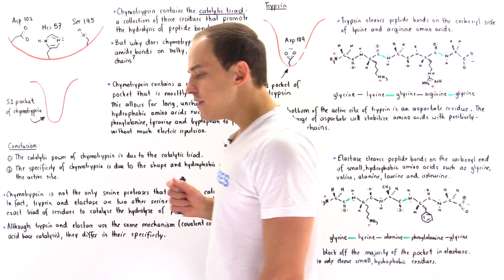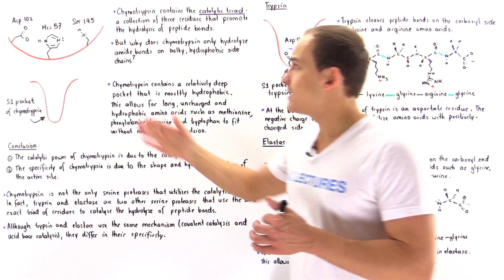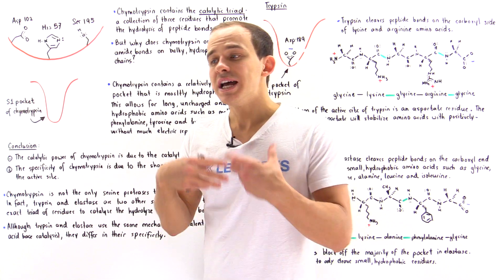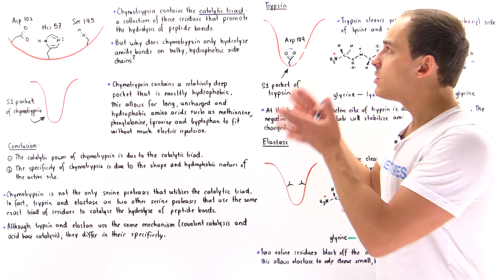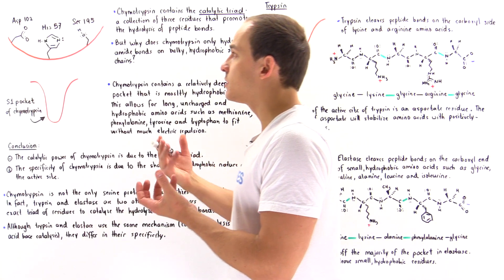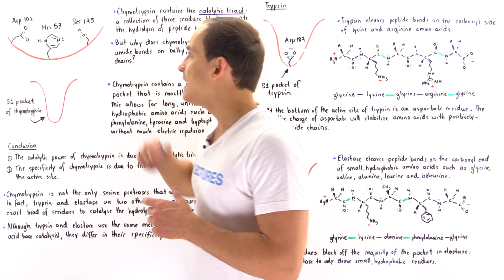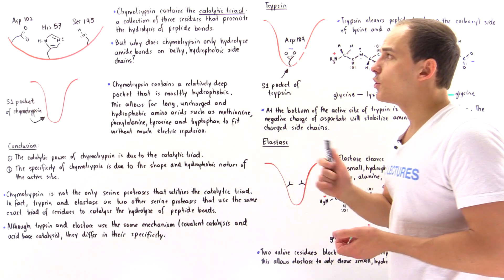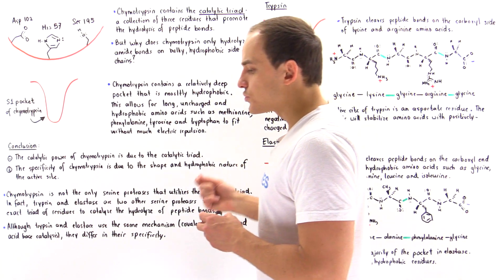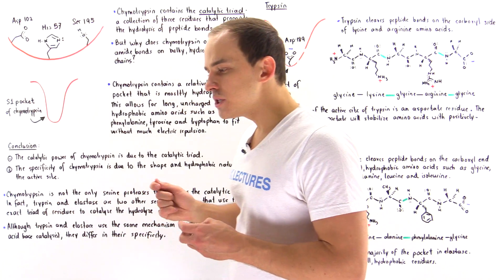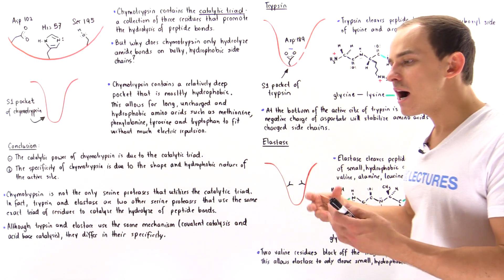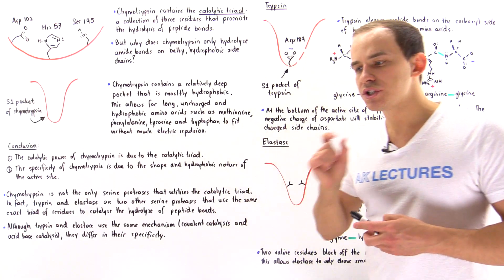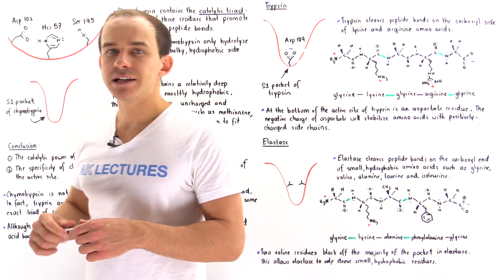As we discussed previously, it's the presence of the catalytic triad inside the active site of chymotrypsin that actually gives it the power of catalysis — the ability to actually cleave those peptide bonds. The catalytic triad is basically this collection of three individual residues: aspartate, histidine, and serine, which work together to promote the cleavage of those peptide bonds. The question still remains: what exactly gives chymotrypsin its specificity — the ability to only cleave on the carboxyl end of specific amino acids that contain bulky hydrophobic side chain groups?